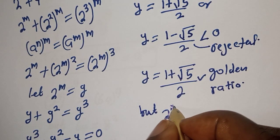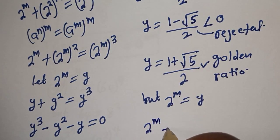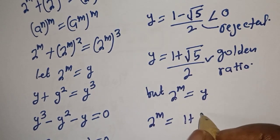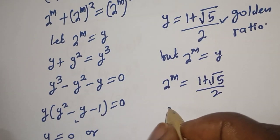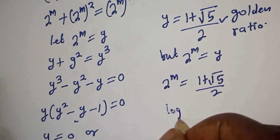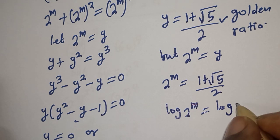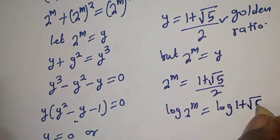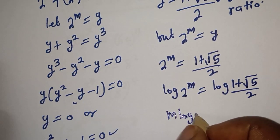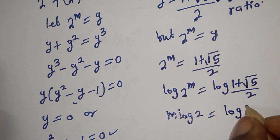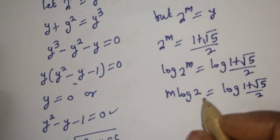Since 2 raised to power m is equal to y, we have 2 raised to power m is equal to 1 plus square root of 5 over 2. Let's take the log of both sides: log of 2 raised to power m is equal to log of 1 plus square root of 5 over 2. This gives m times log 2 is equal to log of 1 plus square root of 5 over 2.